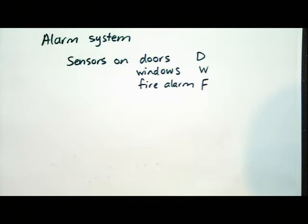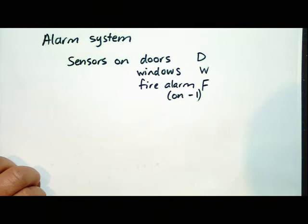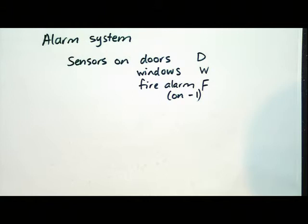If something is open or on, do you think we should give it a 0 or a 1? If it's on, we give it a 1 — good, that's what I would choose. Now let's make an output. If one of these is going off, we might want two different responses: call your cell phone for some, and call the fire department for others.